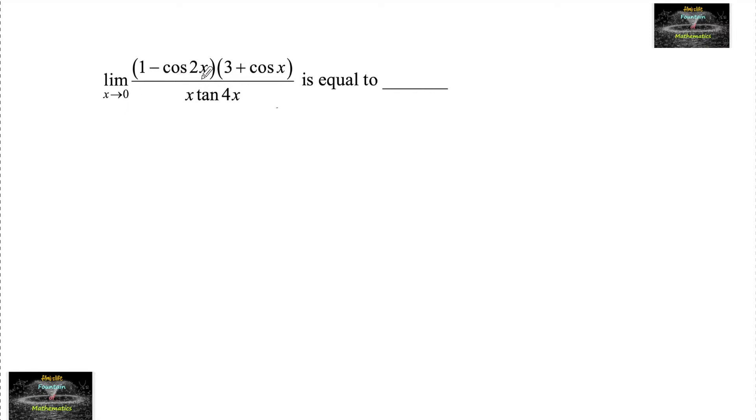Limit as x extends to 0 of (1 - cos 2x)(3 + cos x) upon x tan 4x is equal to...